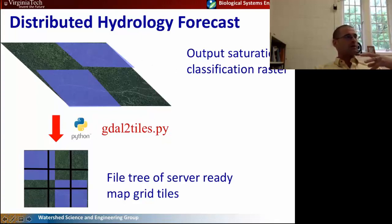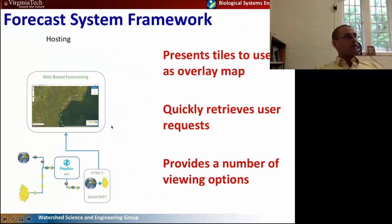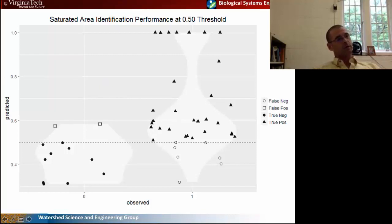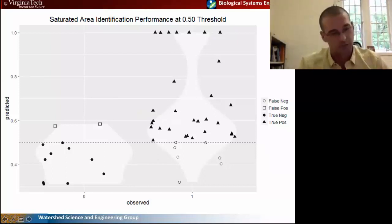We have that output raster of saturated extent, which we convert into a file tree of server-ready map grid tiles. The hosting component presents those tiles to the user as an overlay map. It quickly retrieves user requests — you can zoom down to field scale — and provides a number of different viewing options. Similar to Tony's work, we went through some effort to verify that our model was correctly predicting the extent of the saturated areas. From five different dates where we went out and measured saturated areas across 50 fields, we correctly predicted the saturated content about 88 percent of the time — relatively good performance.